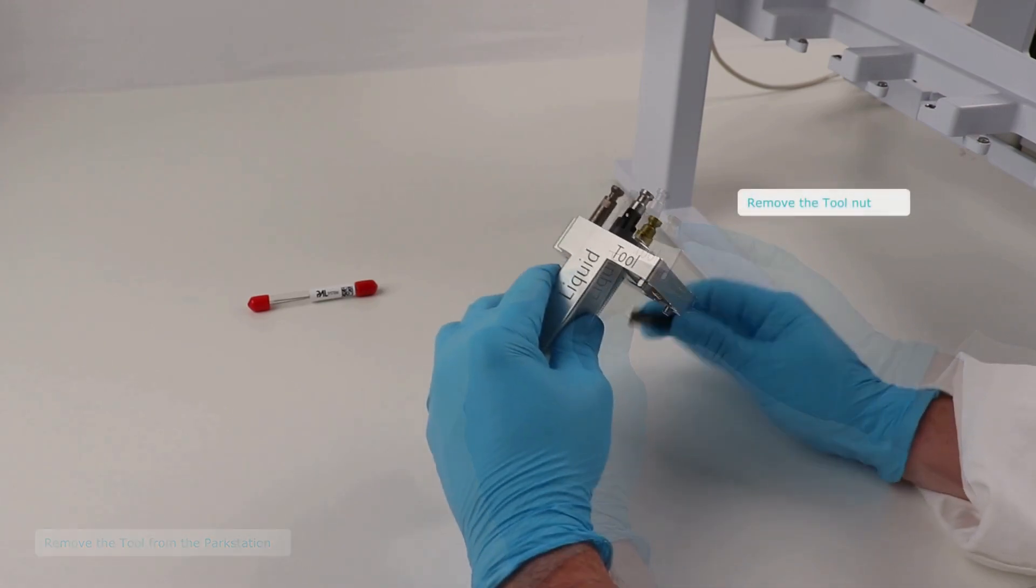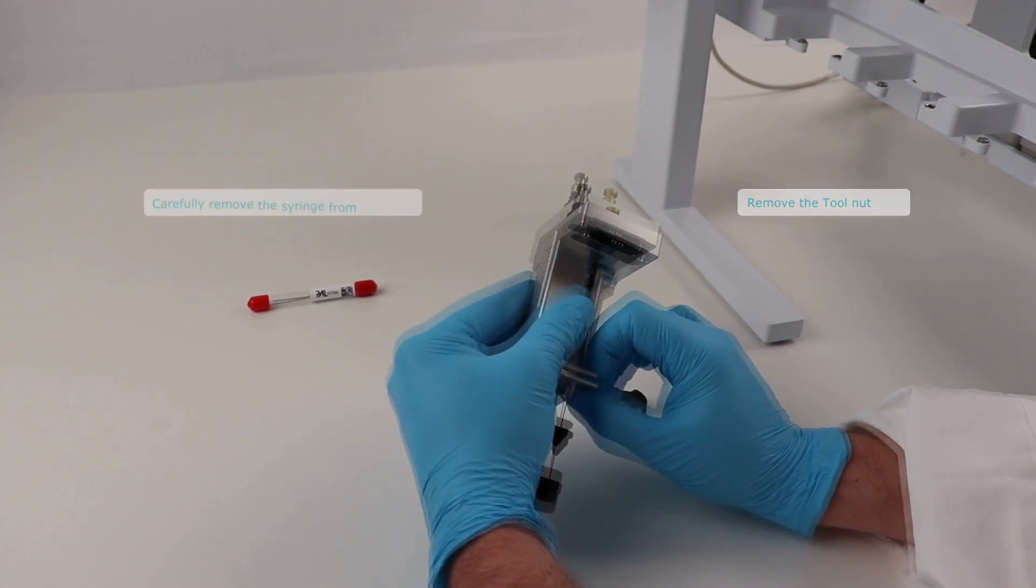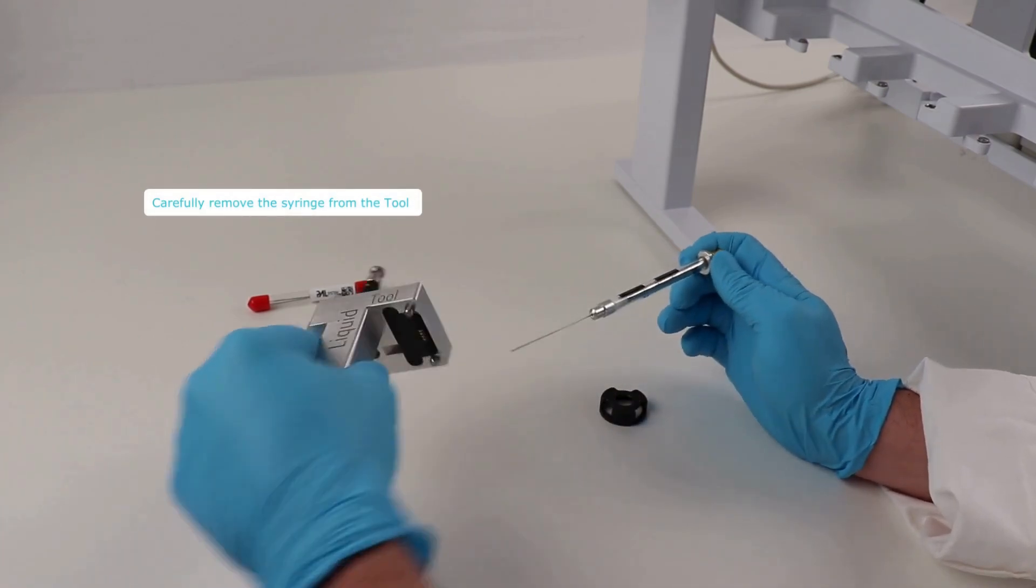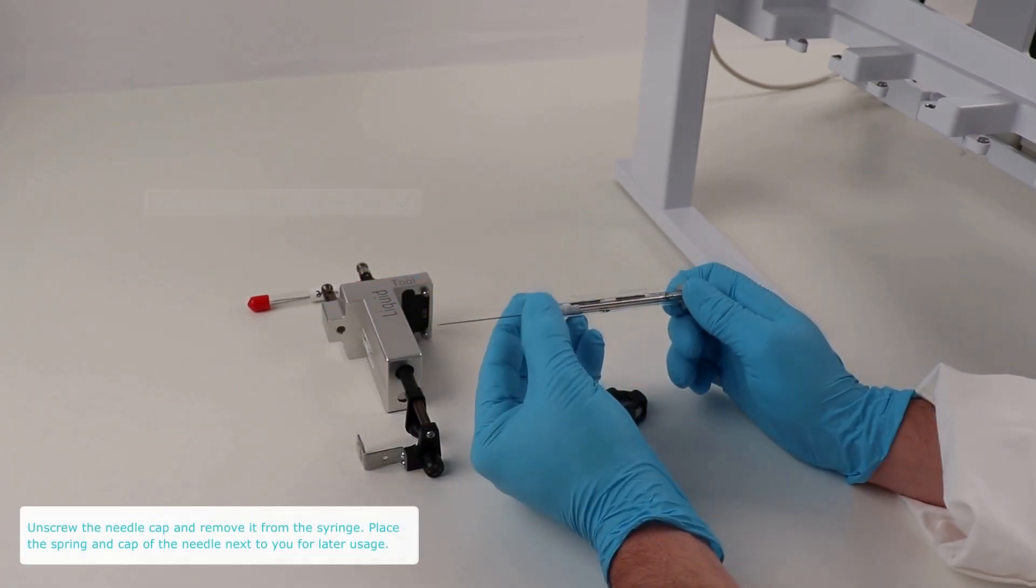By unscrewing the tool nut, you can now access the syringe and remove it from the tool. Place the tool aside and disassemble the syringe.